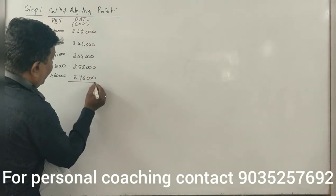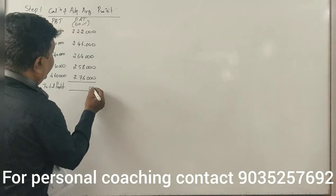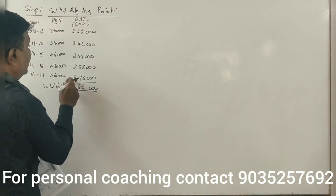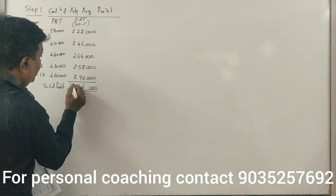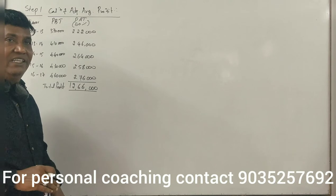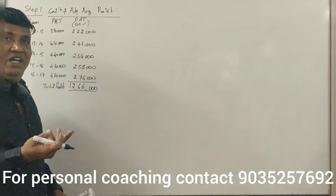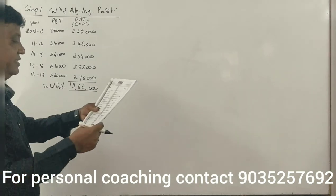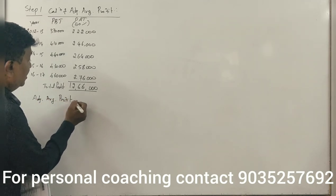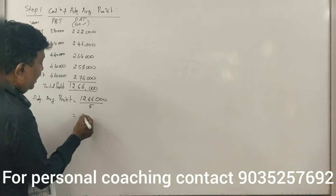The total profit after tax for all 5 years is 12,66,000. Since profits are fluctuating, we use simple average. Average profit equals 12,66,000 divided by 5 years, which gives 2,53,200.